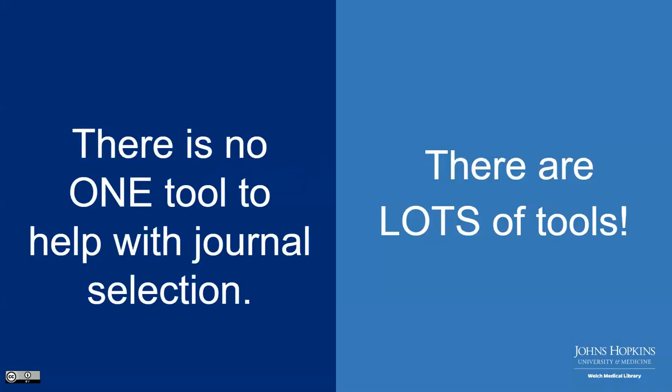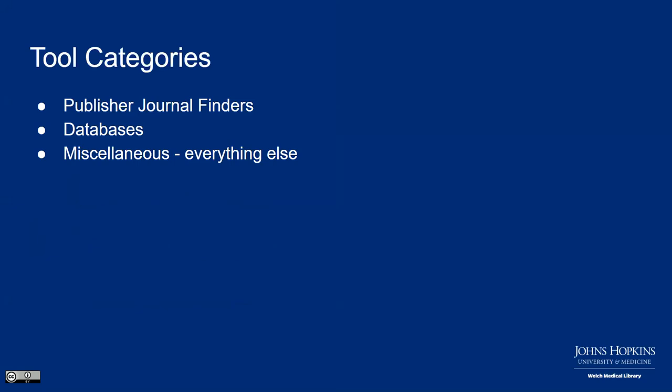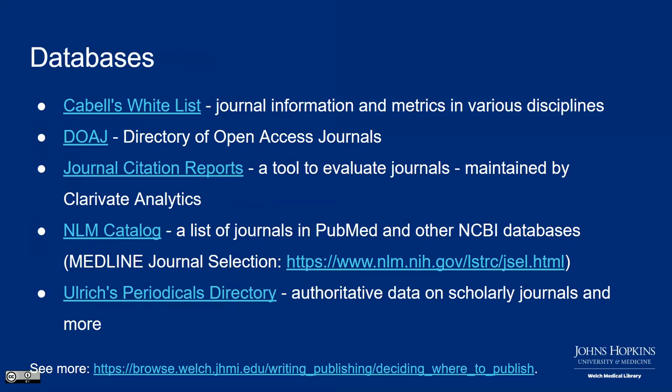For author resources, there's no single tool for journal selection, but there are lots of categories: publisher journal finders, databases that list journals, and many websites. The DOAJ — Directory of Open Access Journals — is where about 50–60% of journals do not carry article processing charges. It's a list of open access journals where journals have applied, stated they conduct rigorous peer review, and been reviewed before entry. It's a good starting place for assessing journal quality, noting that not all journals are listed and absence doesn't necessarily indicate poor quality.